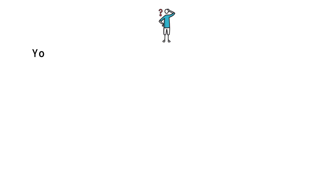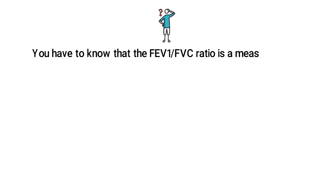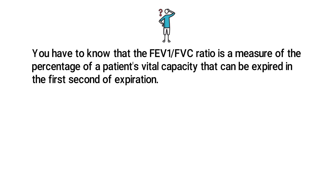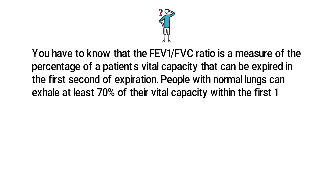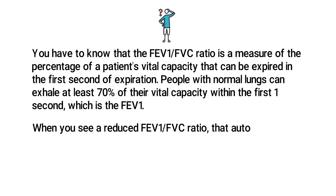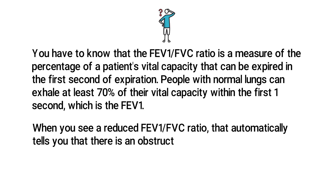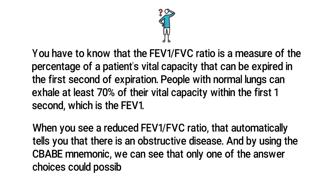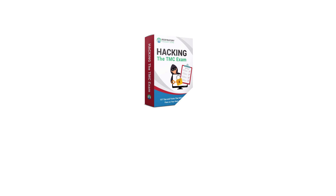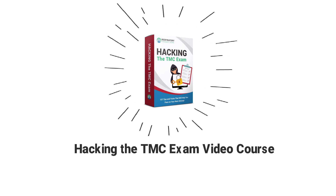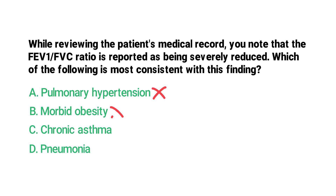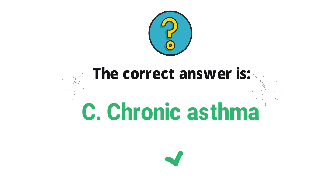The FEV1 to FVC ratio measures the percentage of a patient's vital capacity that can be expired in the first second. People with normal lungs can exhale at least 70% of their vital capacity within the first second. A reduced FEV1 to FVC ratio automatically indicates an obstructive disease. Using the CBABE mnemonic, only one of the answer choices is an obstructive disease — chronic asthma — so the correct answer is C.